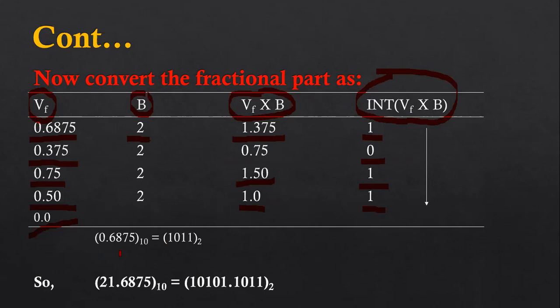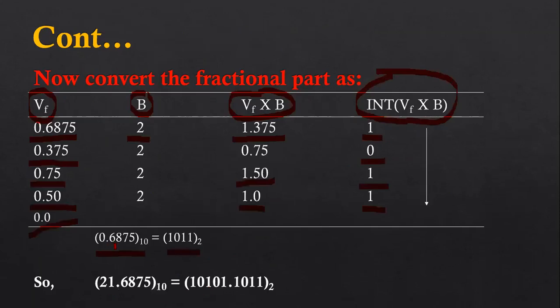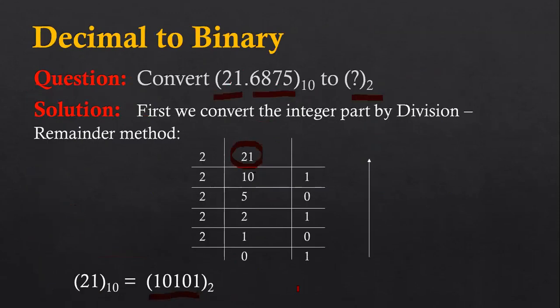The fractional value conversion is 0.1011. So we now have two results: the conversion of 21 is 10101, and the conversion of 0.6875 is 0.1011. Combining both results, 10101 is on the left-hand side of the decimal point and 1011 is on the right-hand side. So 21.6875 in decimal is converted into 10101.1011 in binary.